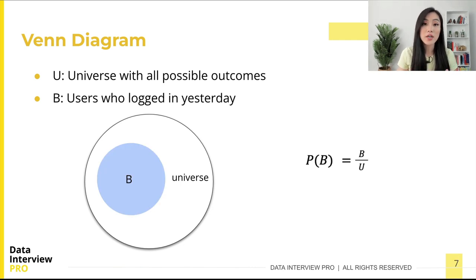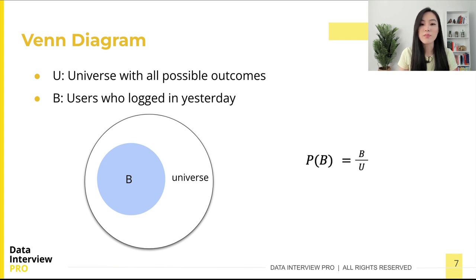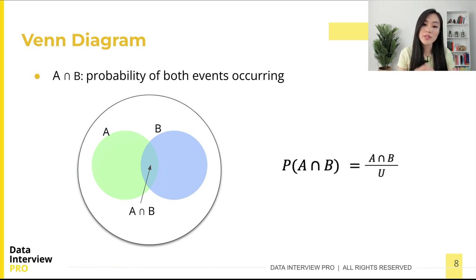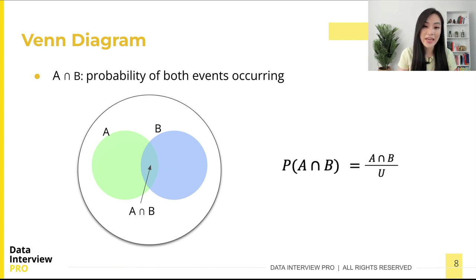Now let's look at another event: a user logging in yesterday — let's call it event B. Similar to event A, we can get the probability that a randomly selected user logged in yesterday as the number of elements in B divided by the total elements of the universe. Now let's look at these two events together. If a user logged in both yesterday and today, we use the overlapping area to represent that event. The joint probability of A and B is the number of elements in the overlapping area over the total number of elements in the universe.